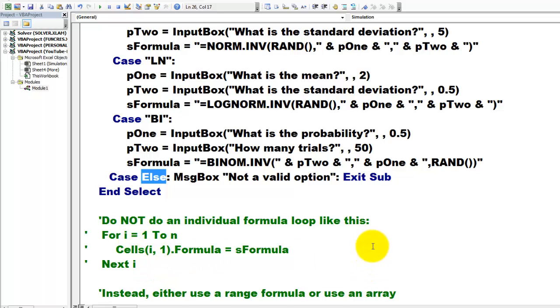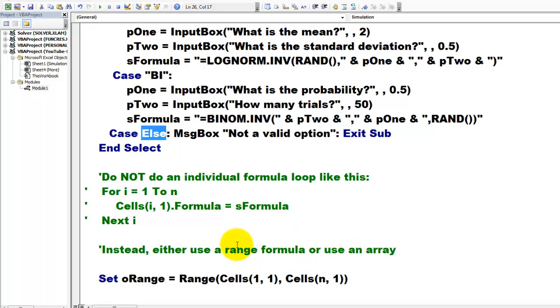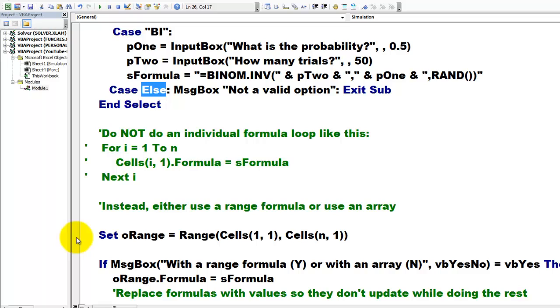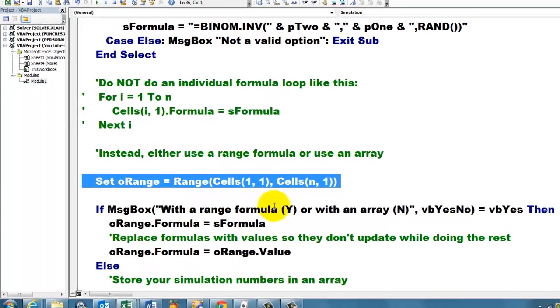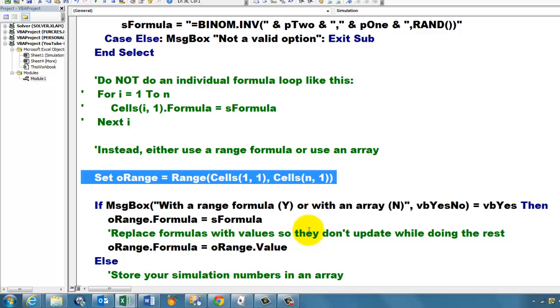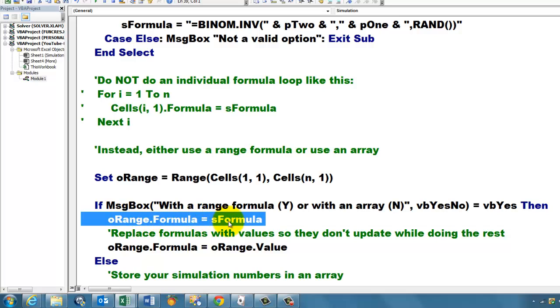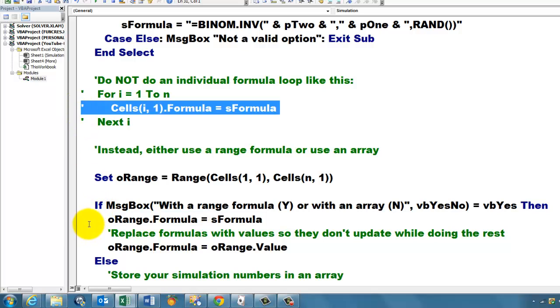I would recommend that you do not loop through all the cells in a loop. That will take very long—there is a lot of overhead cost. So do not do that. Either use a range formula or an array in the background. That is a range formula. We are going to set the range to cells 1,1 through n,1, so 100,000 or up to a million. Use the range formula sFormula in oRange.Formula equals sFormula. That is much faster than using a For loop that does it cell after cell.